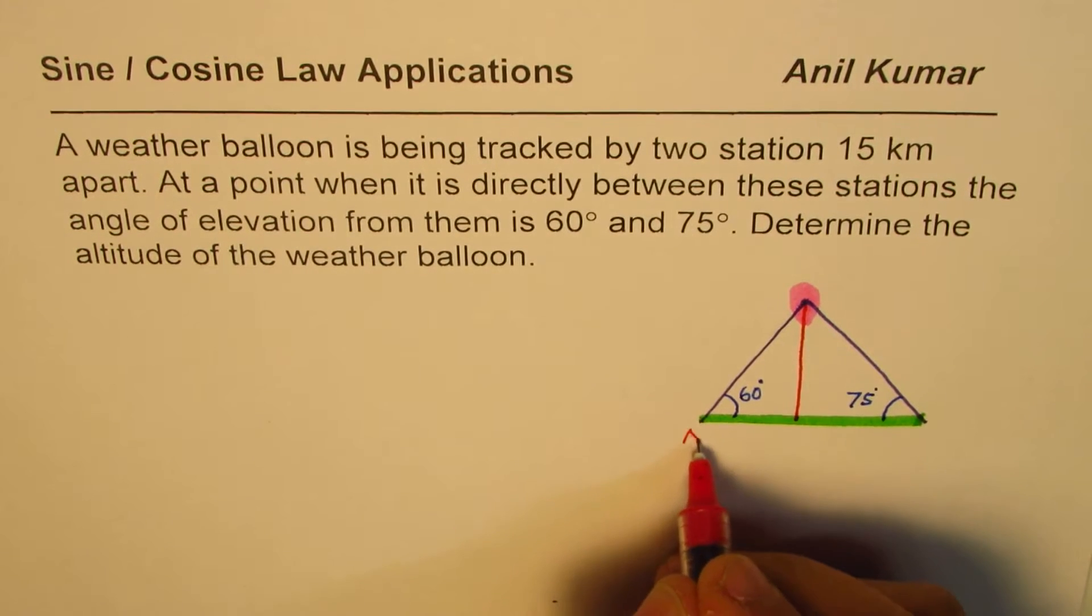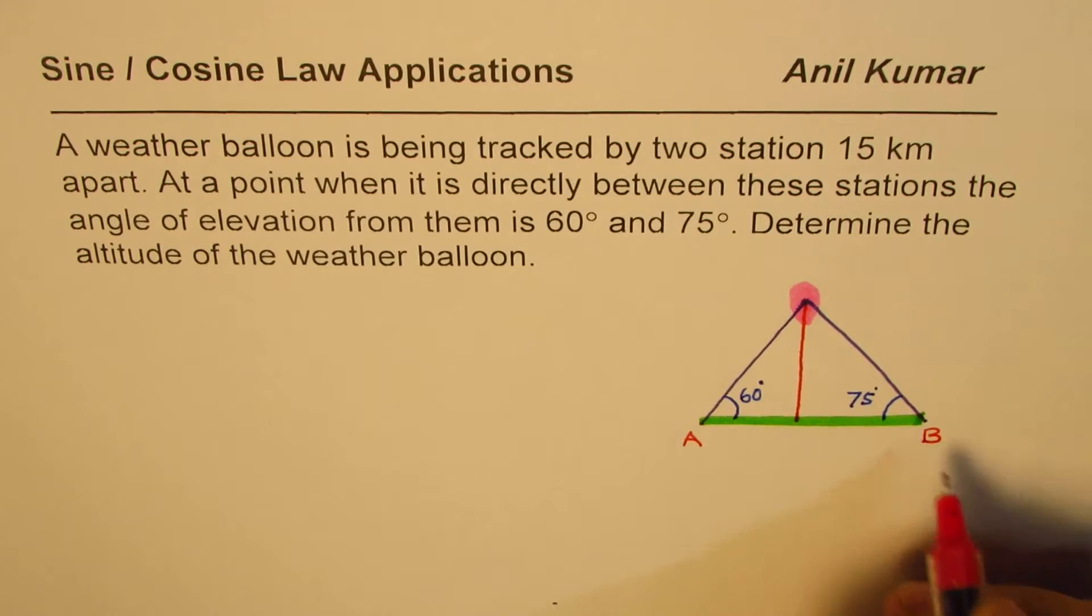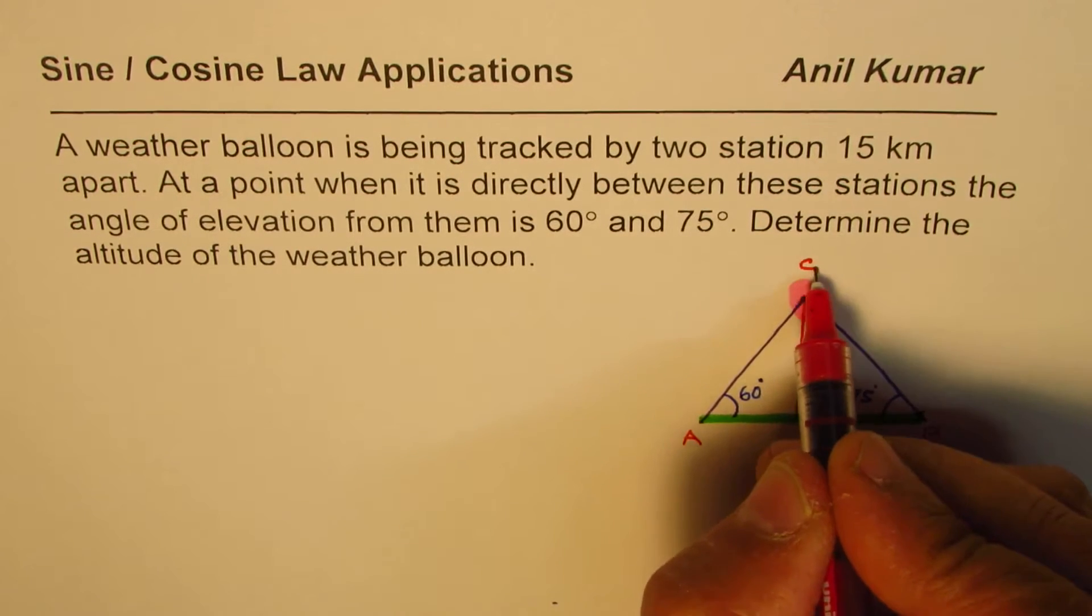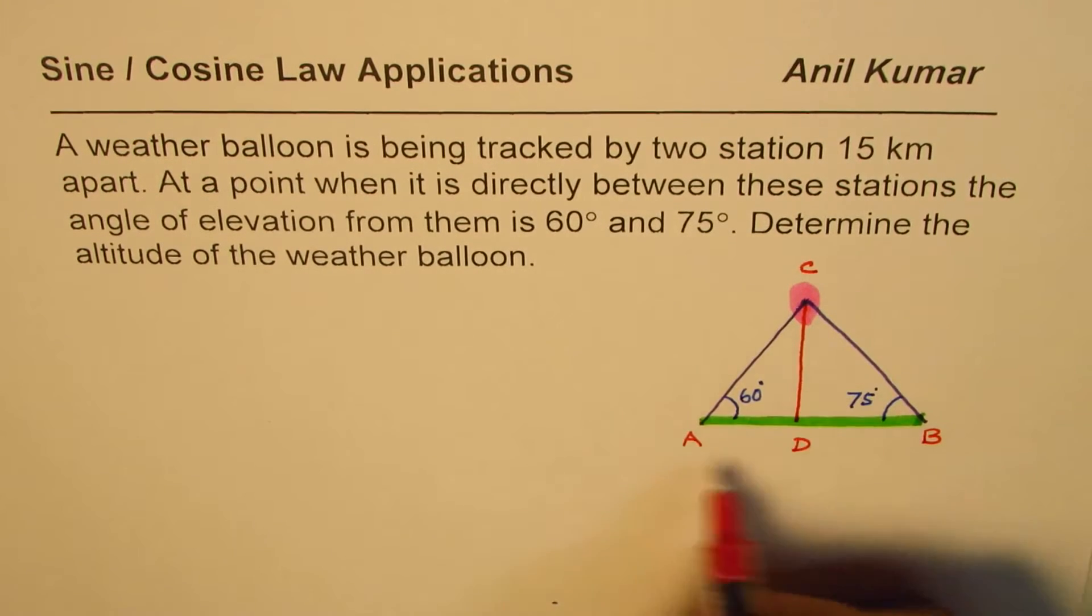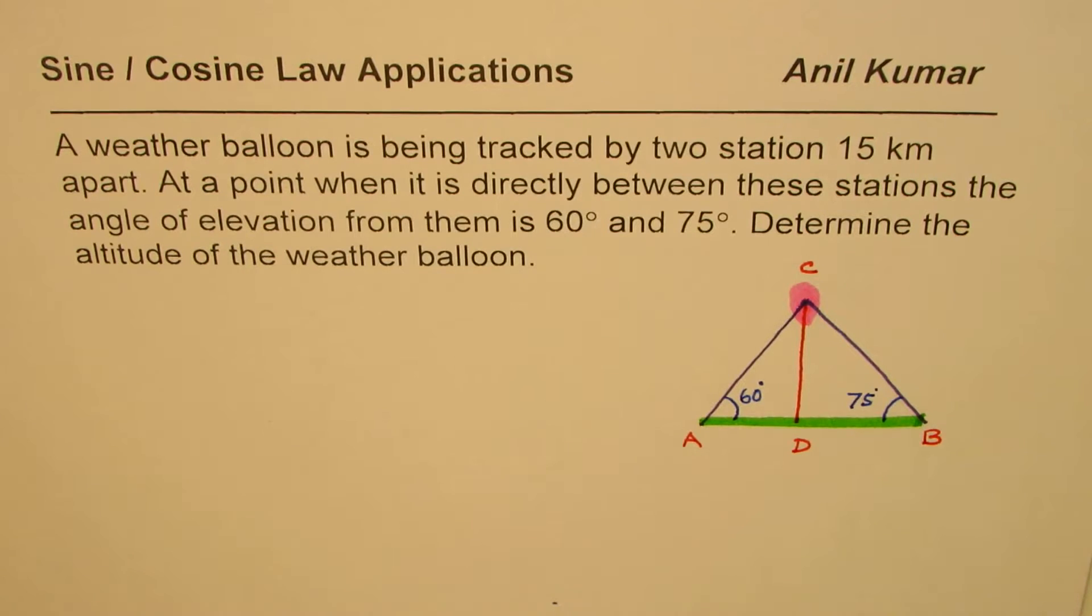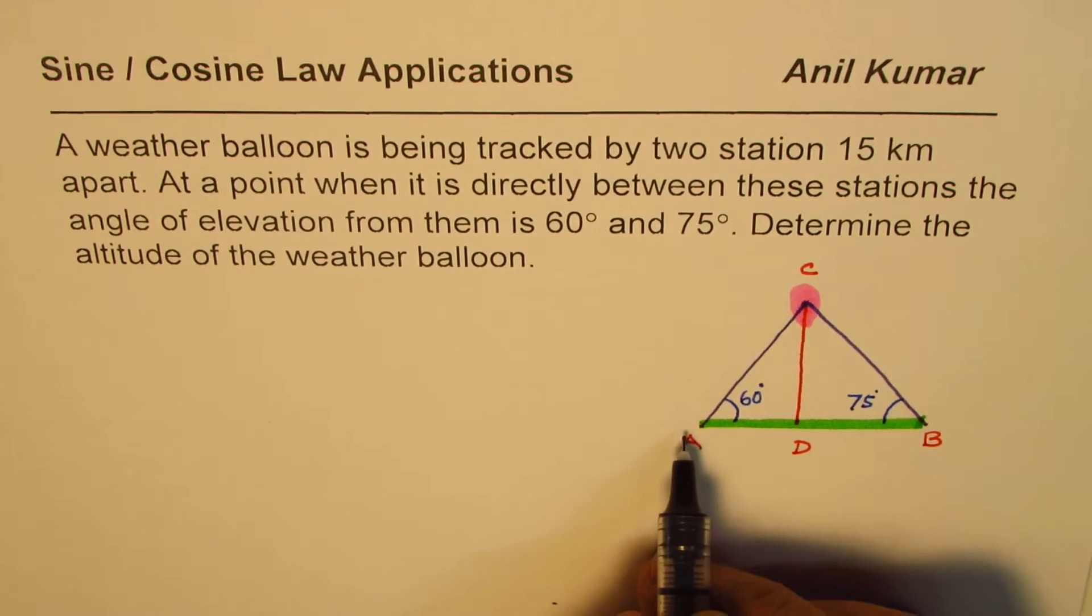Let us say these stations are A and B, and the height is CD. So that is kind of our triangle to solve. Let us see how to solve such a situation. You can always pause the video, answer the question, and then look into my solution.